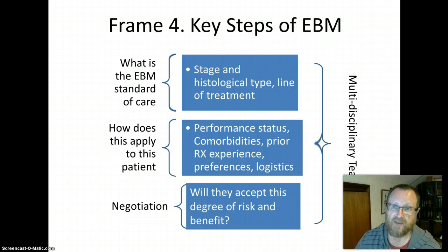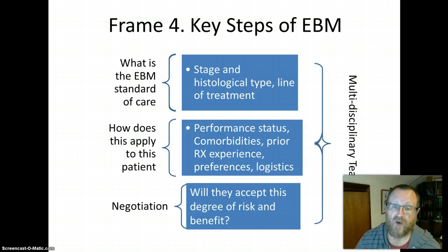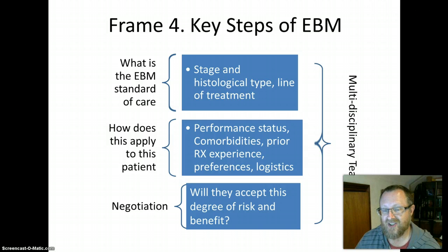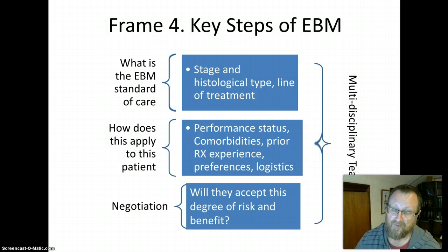Looking at cancer decisions as a type of evidence-based medicine is a helpful way of thinking about key decisions. The framework has three steps. First, ask what the evidence-based medicine standard of care is — this depends on stage, histological type, and line of treatment. Second, ask how this applies to the patient in front of you — considering performance status, comorbidities, prior treatment experience, preferences, and practical logistic issues. Third, shared decision-making: would the patient accept this degree of risk or benefit? Multidisciplinary team input is helpful throughout.